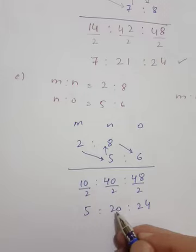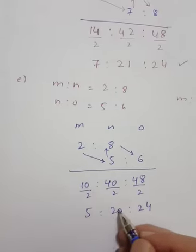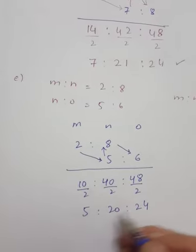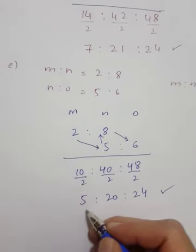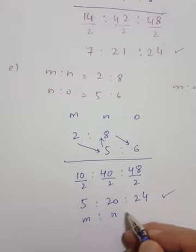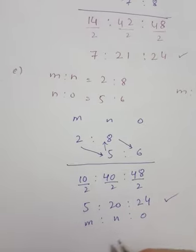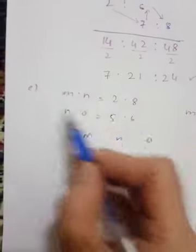If we divide all by 2, we get 5 ratio 20 ratio 24. We could simplify further or leave it as is - both are acceptable answers.